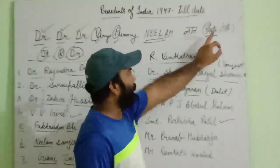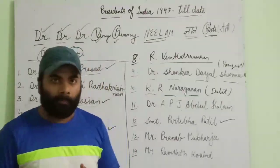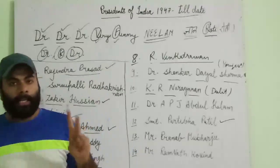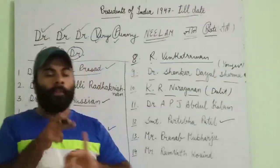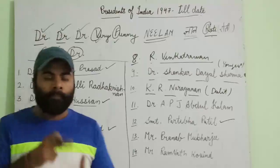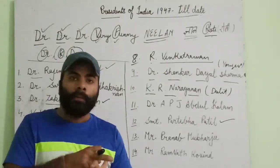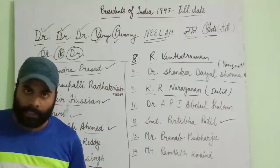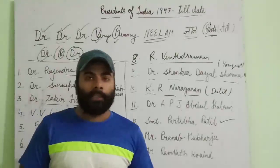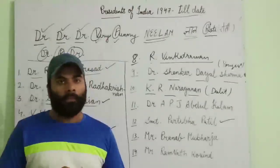Let's recap the full mnemonic: Doctor, Doctor, Doctor — Dr. Rajendra Prasad (1st), Dr. Sarvepalli Radhakrishnan (2nd), Dr. Zakir Hussain (3rd). Very — V.V. Giri (4th). Funny — Fakhruddin Ali Ahmed (5th). Neelam — Neelam Sanjeev Reddy (6th). Gyaan — Gyaani Zail Singh (7th). Roti — R. Venkataraman (8th). Then Kyunki Doctor ki Shaadi Doctor se: Dr. Shankar Dayal Sharma (9th), K.R. Narayanan (10th), Dr. A.P.J. Abdul Kalam (11th). And finally Pratibha Devi Singh Patil (12th), Pranab Mukherjee (13th), and Ram Nath Kovind (14th). In the next video we will learn about the Prime Ministers of India in sequence.